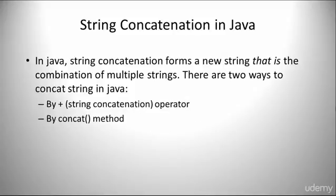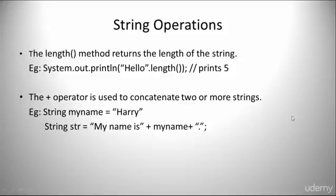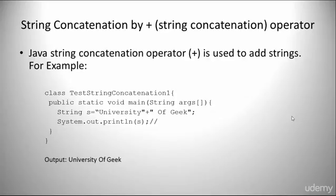String concatenation in Java forms a new string that is the combination of multiple strings. There are two ways to concatenate a string in Java: by the string concatenation operator, and by the concat method. The Java string concatenation operator is used to add strings — for example, the output of concatenating "University" and "of Geek" would be "University of Geek".